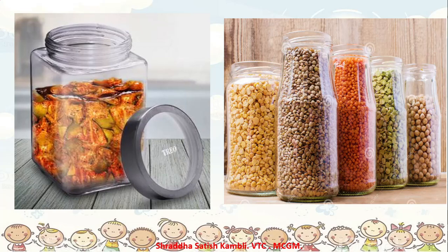They have stored different kinds of dal and different kinds of lentils in glass bottles. You can also see that if it is a steel bottle, you have to open every one of them and check what is inside. But here, since this is transparent, you can see from outside what is there inside the container. So these are some properties of glass.